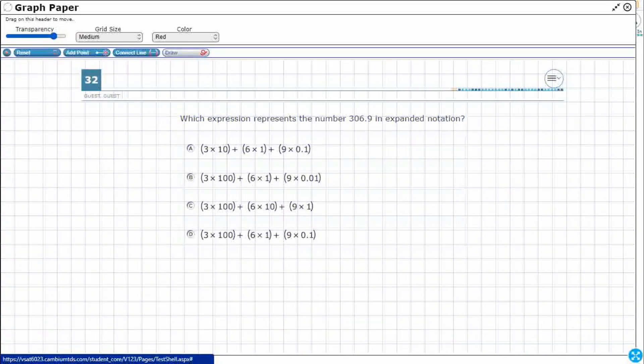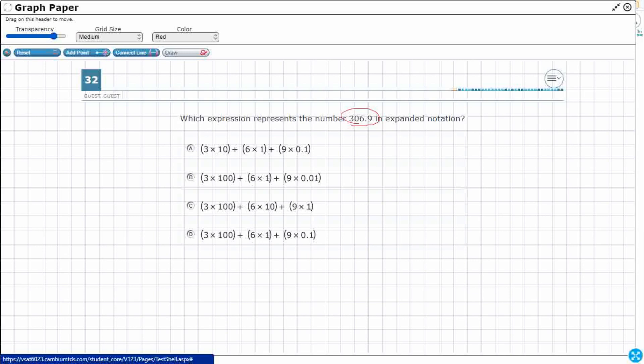Let's use draw. So 306.9, 306 and 9 tenths. Alright, so let's take a look at what our place value looks like. I'm just going to draw it right here. Let me see, I've got a decimal.